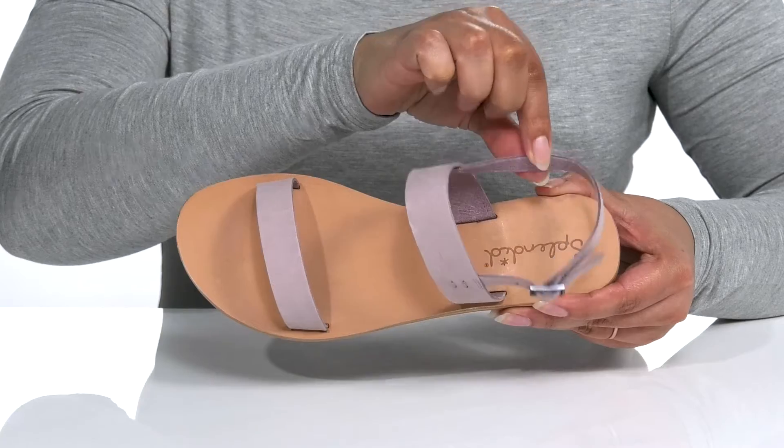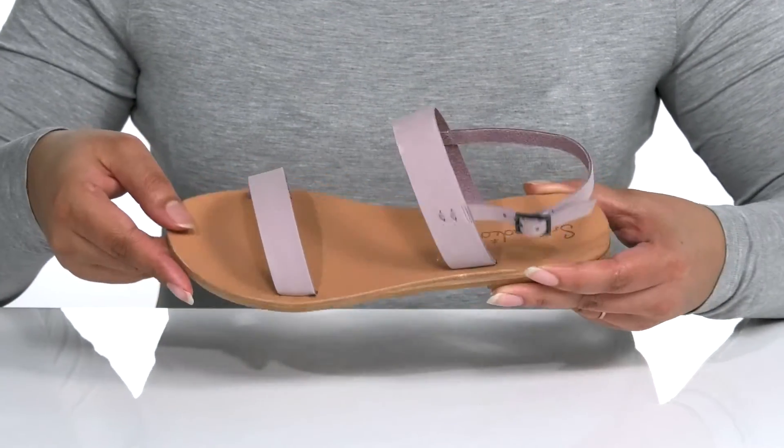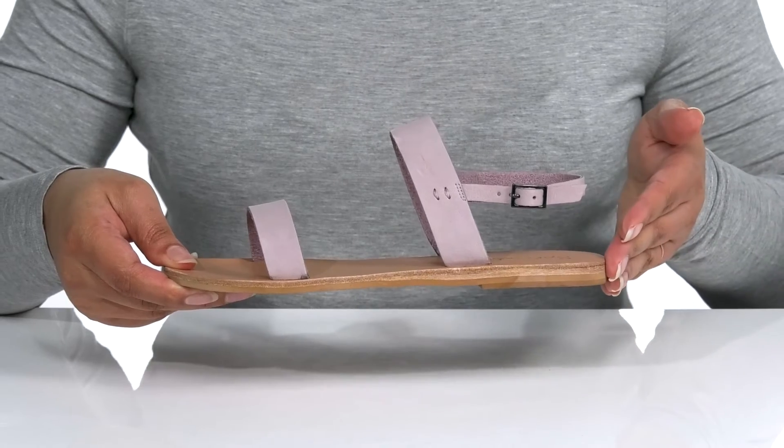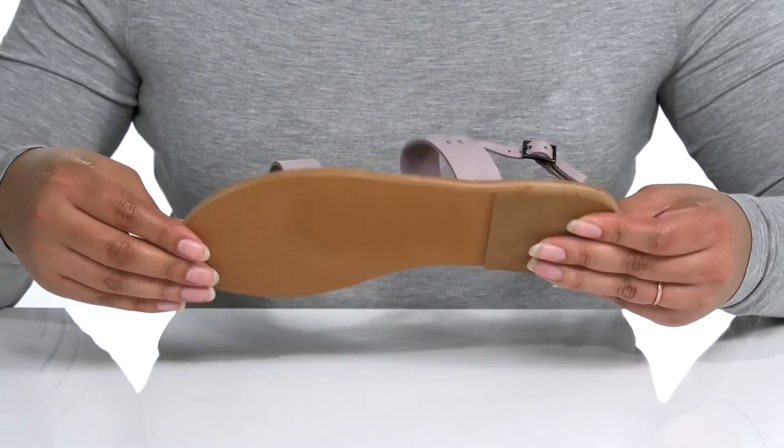Inside there is a leather lining with a smooth footbed and the Splendid logo at the heel. You'll get a little boost in height with the stacked heel at the midsole and it's all on top of a smooth synthetic outsole.